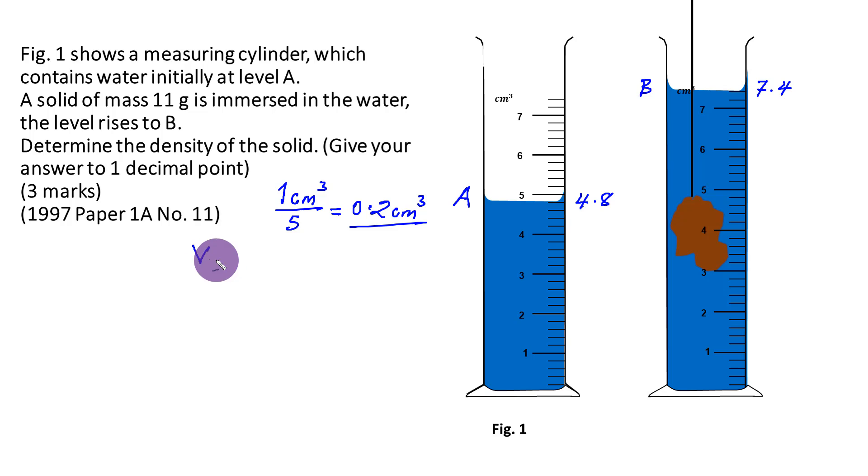So that is where we get that volume V by getting 7.4 centimeters cubed minus 4.8, and you're going to get 2.6 centimeters cubed.